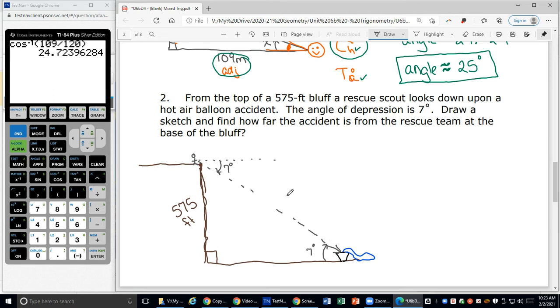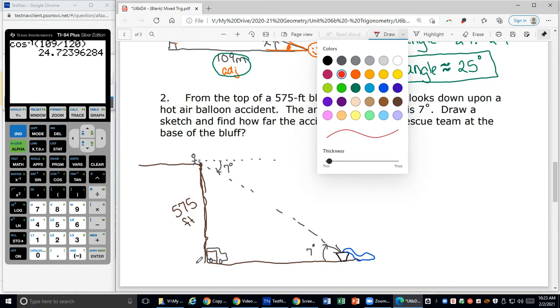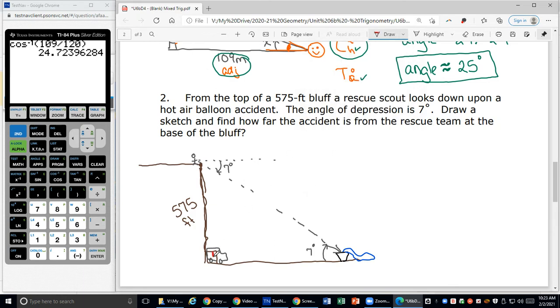We draw a sketch, which we've been doing as I've been going through, find out how far the accident is from the rescue team at the base of the bluff. So down here, I've got this rescue team at the base of the bluff. It's a little ambulance. There's my rescue team. How far does the rescue team need to go to get over here to the accident?